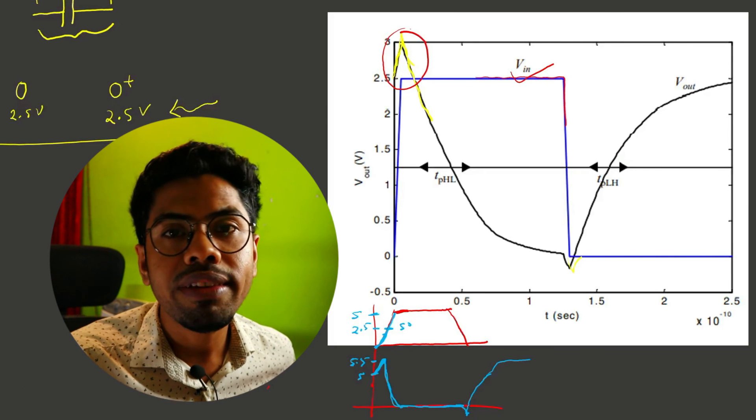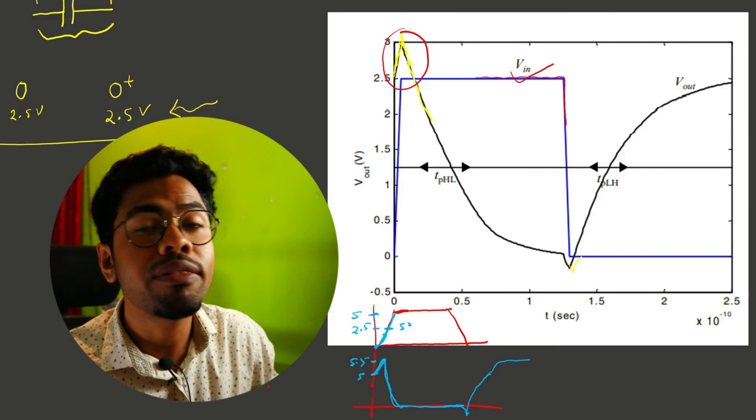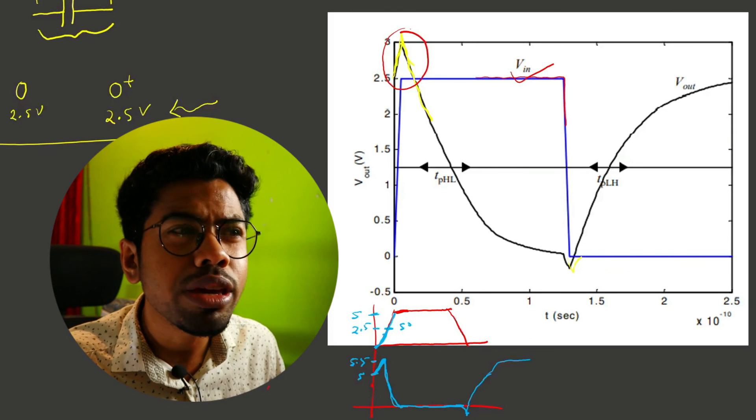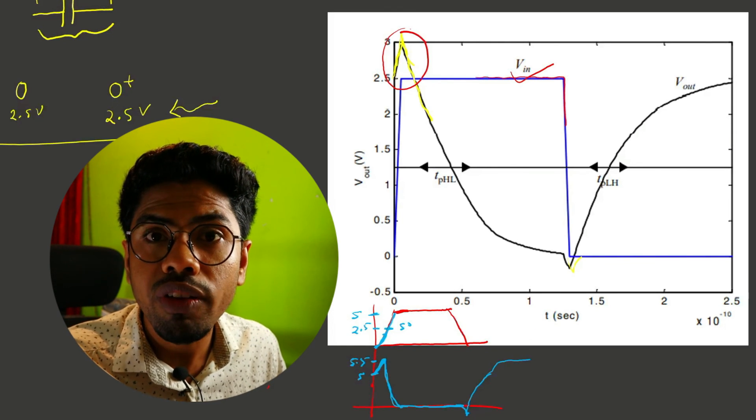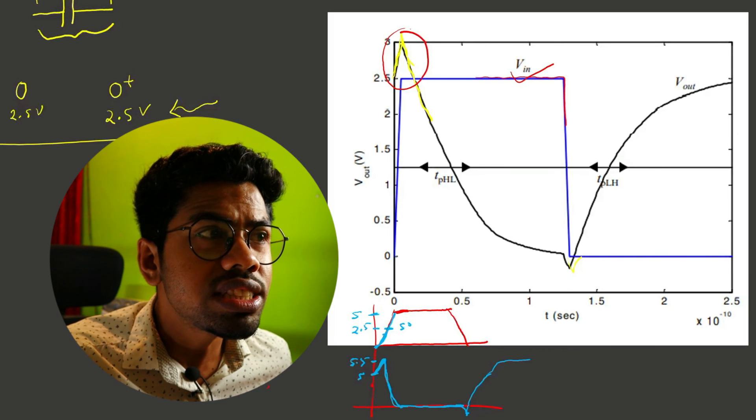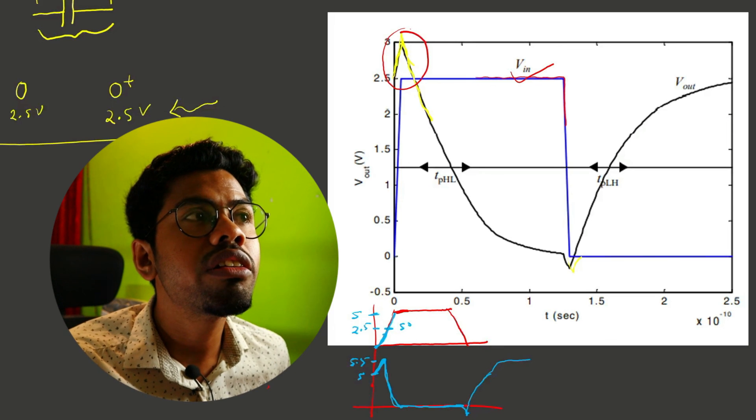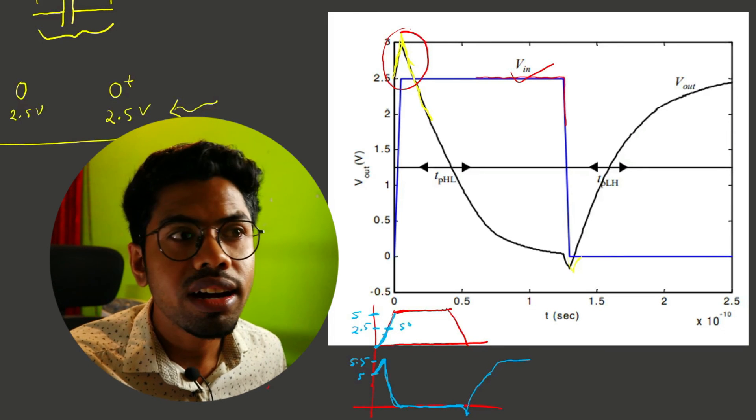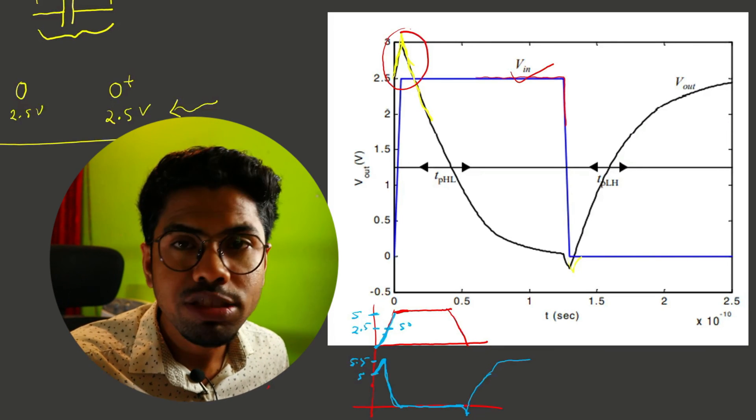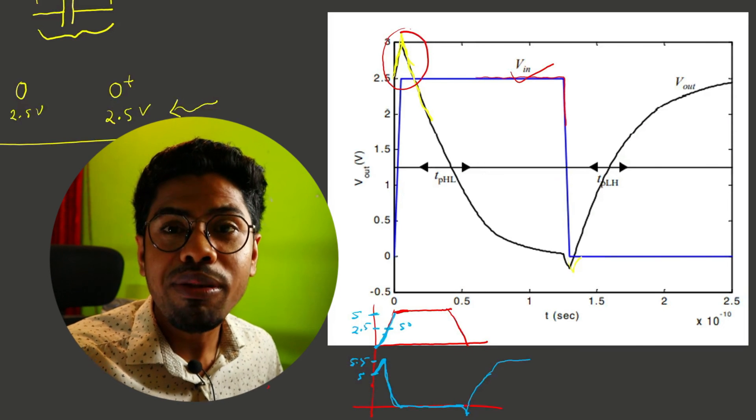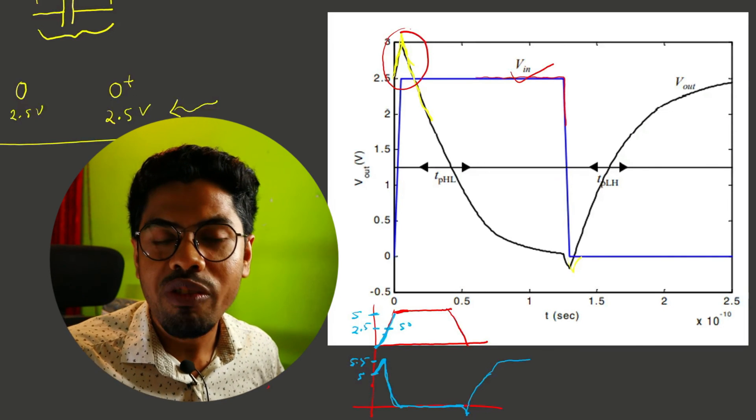That is the phenomena happening here. You can see our delay is getting increased because due to this overshoot only we're taking a little more time to go from top to zero and from zero to high. That's why it's a non-ideality of our design, but it will happen. We can just take care that when we're designing our layout, we should keep all our sincerity so we can reduce this capacitance.